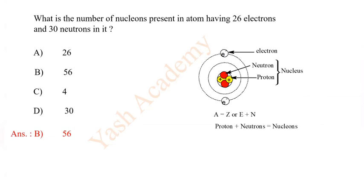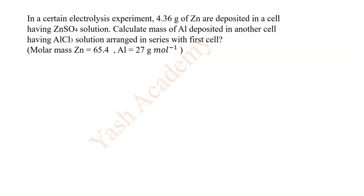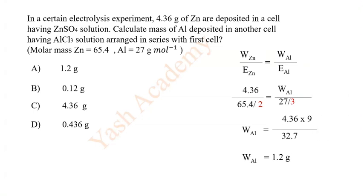In a certain electrolysis experiment, 4.36 gram of zinc are deposited in a cell having ZnSO4 solution. Calculate mass of aluminum deposited in another cell having AlCl3 solution arranged in series with first cell. You are given molar mass of zinc and aluminum. Options: A 1.2 gram, B 0.12 gram, C 4.36 gram, D 0.436 gram. With the help of this equation we can find out the mass of aluminum deposited. So A is the correct answer: 1.2 gram.